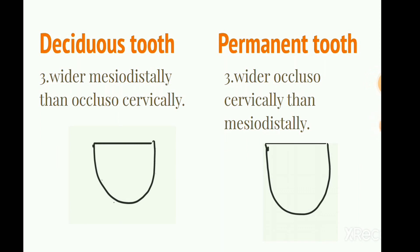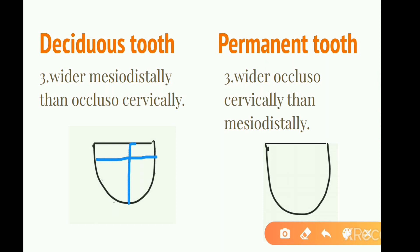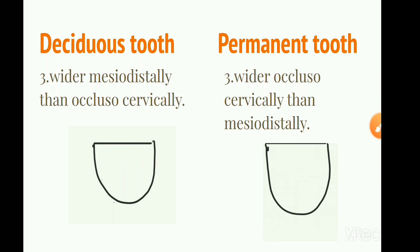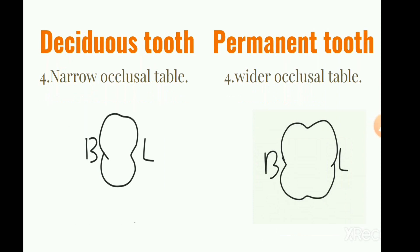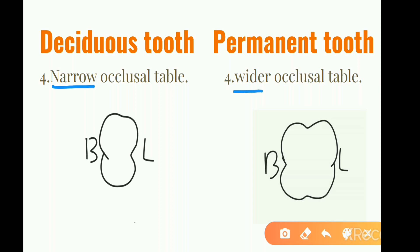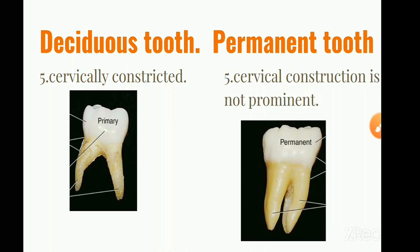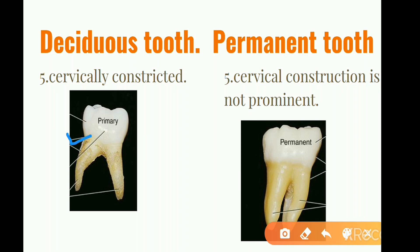Number 3: Deciduous teeth are wider mesiodistally than occlusocervically. Number 4: Deciduous teeth are narrower occlusocervically.